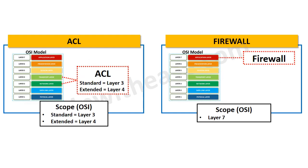Moving to the next parameter — scope with respect to the OSI model. ACL is only limited to layer 4, i.e. the transport layer, where it can allow or block traffic based on TCP or UDP port numbers. For reference, standard access control lists can perform traffic control up to layer 3, while extended ACLs control traffic up to layer 4. Firewalls can go up to layer 7, i.e. the application layer, in order to control traffic.